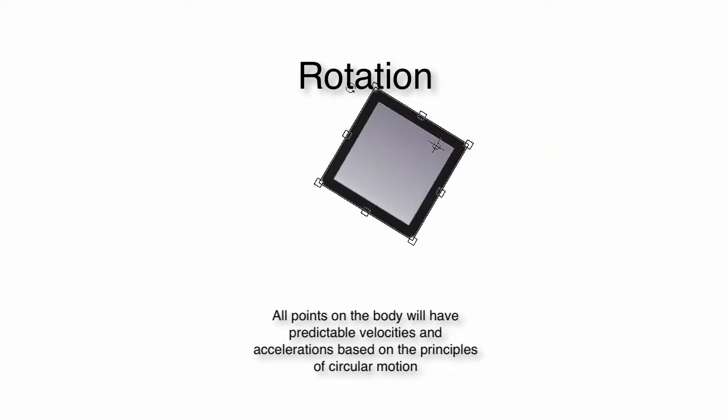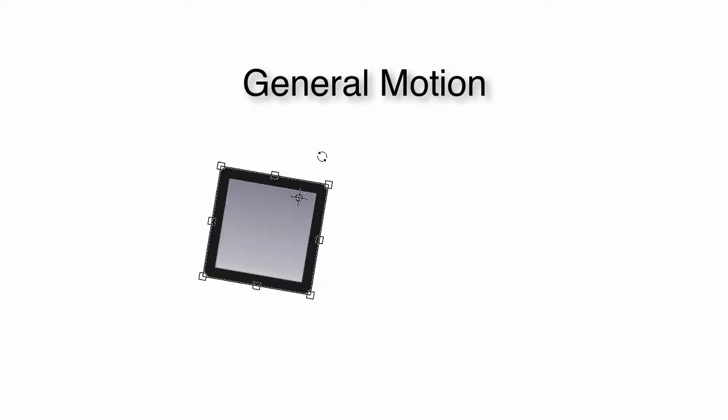If we have general motion, that's just if we combine both of them. The way my mouse is set up right now I can't translate and rotate simultaneously, but you get the point. If it was moving through the air while flipping, that would be considered general motion—a combination of translation and rotation.